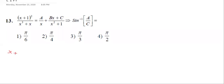X plus 1 whole square is equal to, on the right hand side: A into x square plus 1, plus Bx plus c into x. So the left hand side (x+1)² equals A(x²+1) + (Bx+c)x.